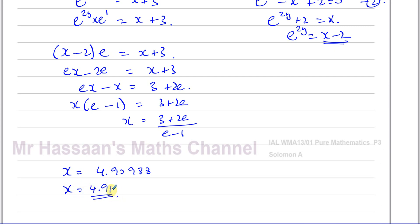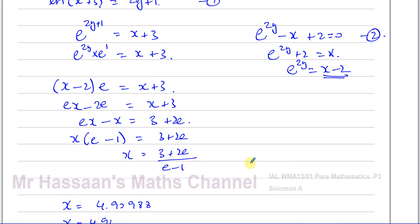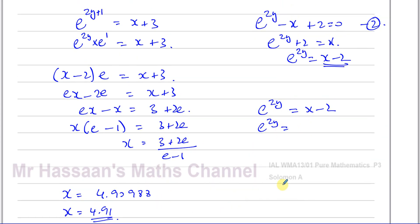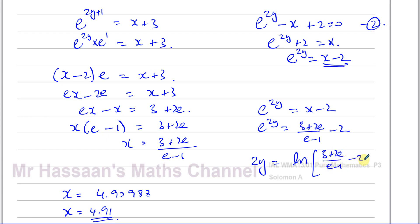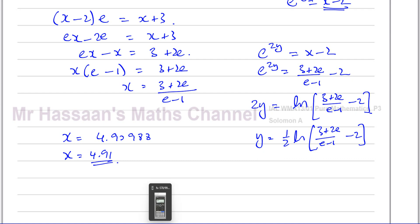Now I can find what Y is. I know that E to the power of 2Y is equal to X minus 2. So E to the power of 2Y equals (3 plus 2E) over (E minus 1) minus 2, taking the exact form. Now I take the ln of both sides in order to free Y from the power, giving 2Y equals ln of (3 plus 2E) over (E minus 1) minus 2. Therefore Y equals one half times ln of (3 plus 2E) over (E minus 1) minus 2. Putting that in the calculator gives my answer for Y.